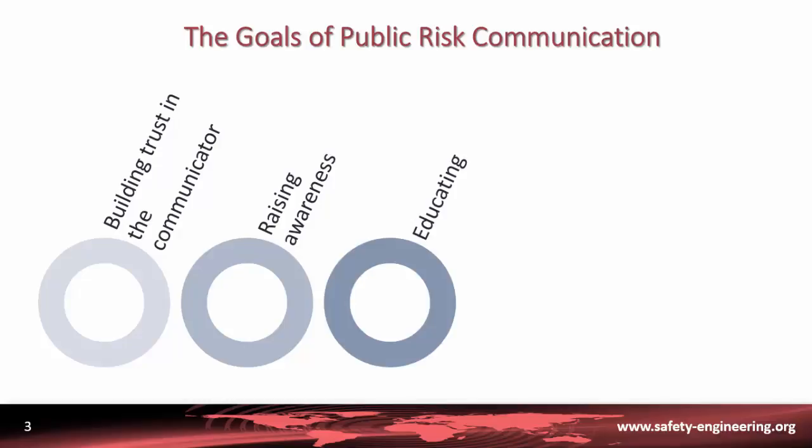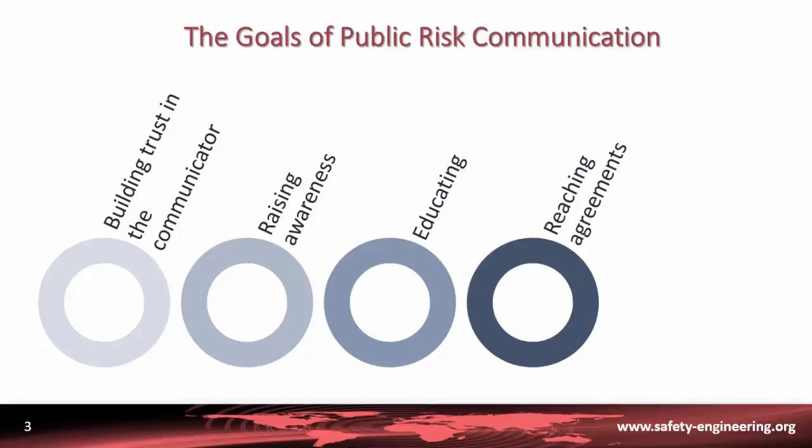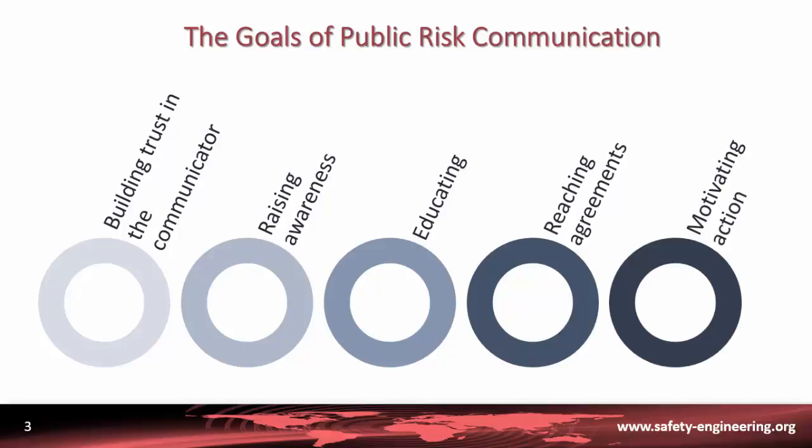Goal number three can be to educate the population or the citizens in general — generally speaking, the receiver of the communication. Number four, you may want to trigger a risk communication campaign in order to reach an agreement among different players, different stakeholders. And finally, goal number five, last but not least, you may want to trigger a risk communication campaign in order to motivate people for action.